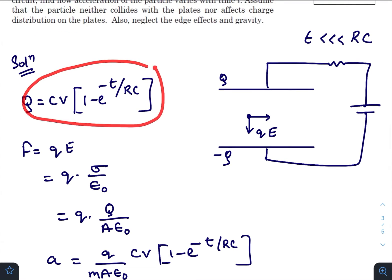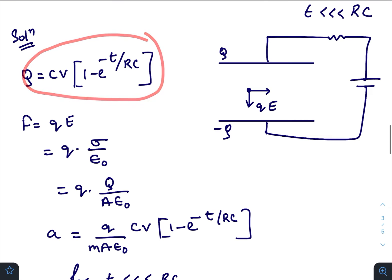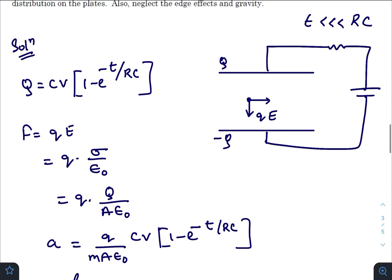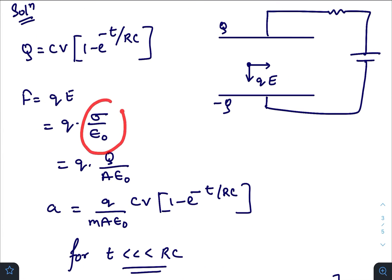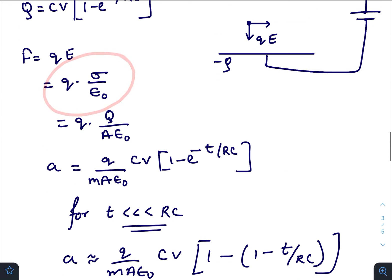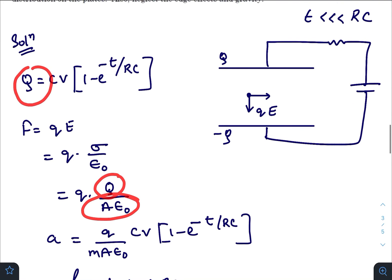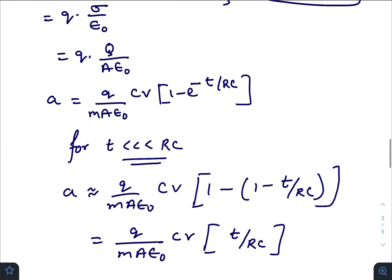At any instant, the charge on the positive plate and negative plate can be written like this. The electric field produced due to these two plates would be equal to sigma divided by epsilon not. The force on the charge moving would be sigma times q, which is Q by A epsilon not. And Q at any time T is this one, so just plug it here.